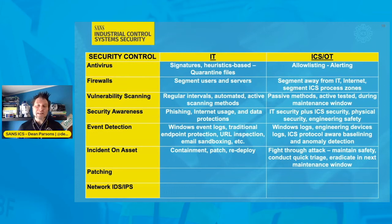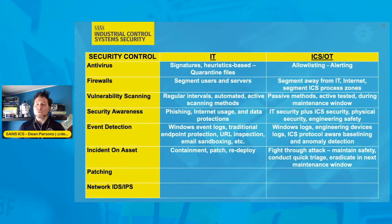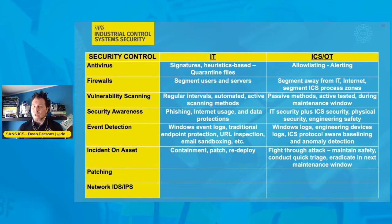When an incident happens in IT, it's really all about containment, patching the device, and redeploying the device. In ICS, it's a different approach. Fighting through the attack is not uncommon — this means maintaining safety throughout an actual event, conducting quick triage of the threat to understand what's happening, trying to quarantine or contain the threat, but the eradication may come at a later date once the threat is contained. Again, fighting through that attack, prioritizing safety and reliability of operations and engineering.